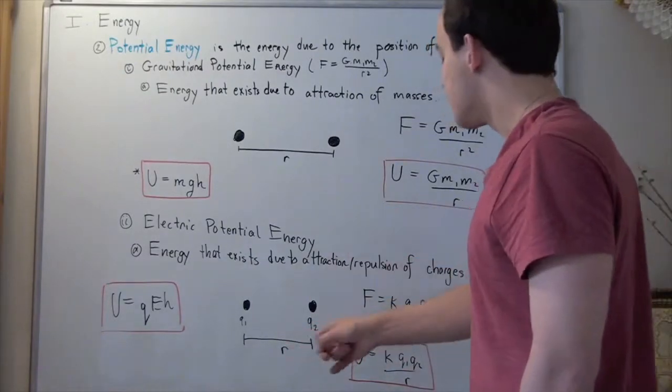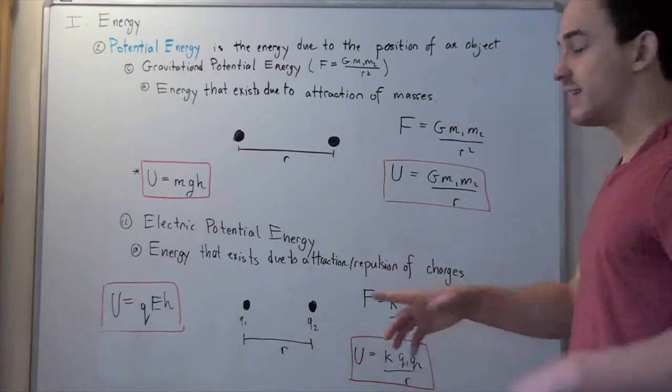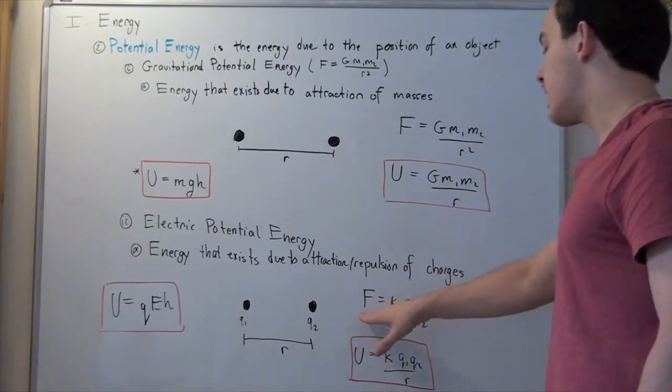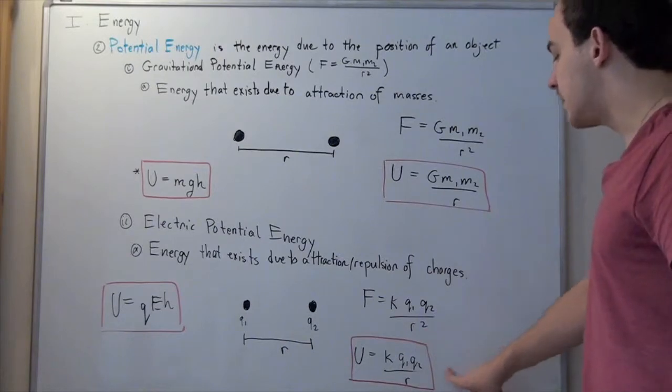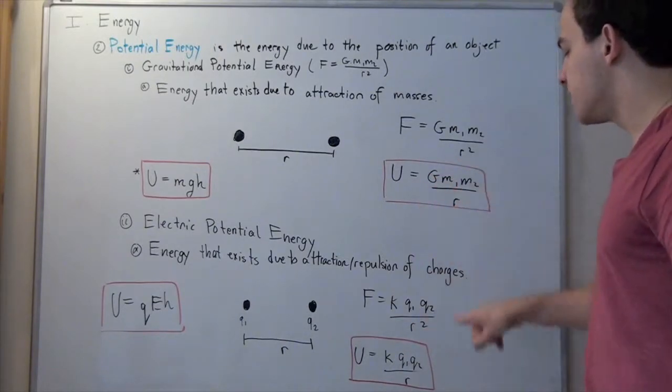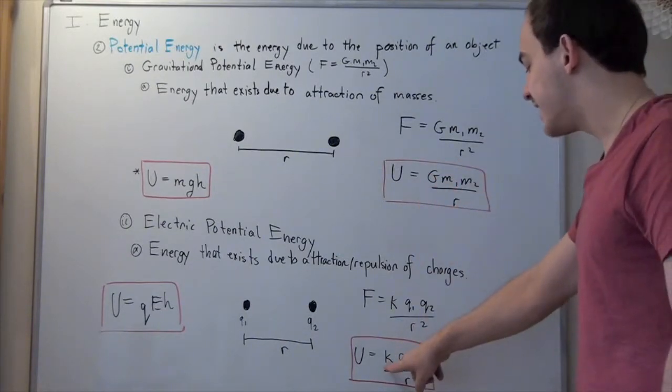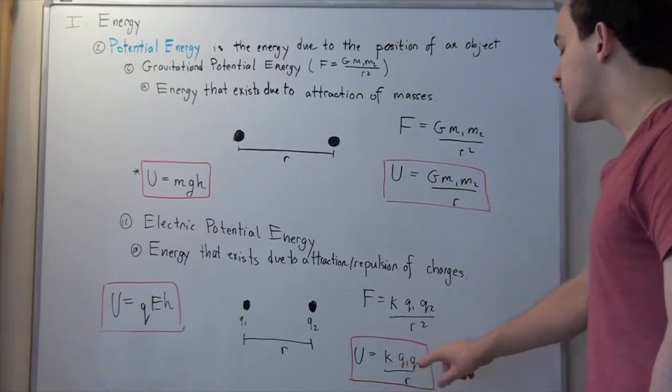So, F times R gives us F, this guy times R. R's cancel, and I'm left with a similar formula, except now I have my constant K, and my two charges Q1 and Q2.